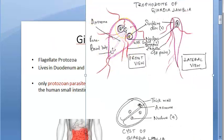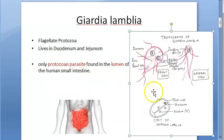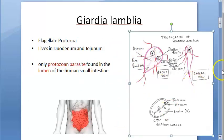This is how Giardia lamblia looks. It has four pairs of flagella. This is the front view and this is the lateral view - it looks like a fish eating something. These are the suckling discs by which it adheres to the small intestine. This is the cyst of Giardia lamblia, so there is the trophozoite form and the cyst form.